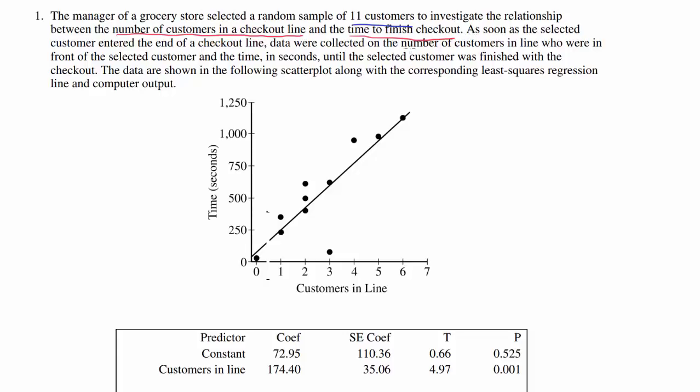As soon as the selected customer entered the end of the checkout line, data were collected on the number of customers in line who are in front of the selected customer and the time in seconds until the selected customer was finished with the checkout. So if you go in to the checkout line and there is one person in front of you and it takes you around 240 seconds, that's how you're going to plot the point. Let's read on.